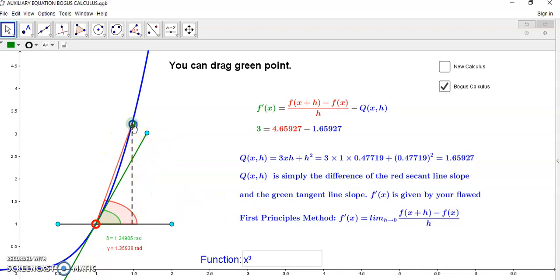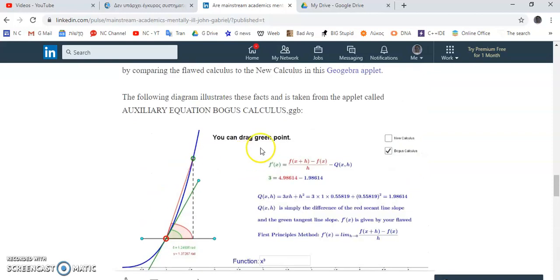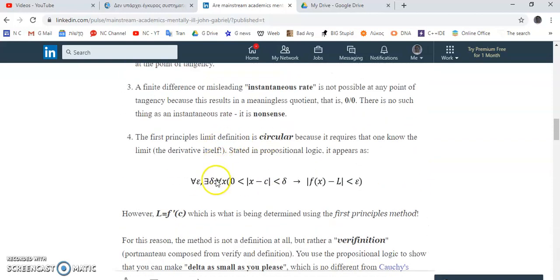You see what happens as h, which is this distance here, becomes smaller. This here, which is the difference between the slopes, between the red slope and the green slope, becomes closer to zero. Eventually at the point of tangency, it's not even defined. If I go there, let me just try to get it back onto three. What is Q(h)? It can't even be defined, and this here is not defined either—the red secant line slope. In the new calculus, this has all been sorted out because the new calculus is the first and only rigorous formulation.